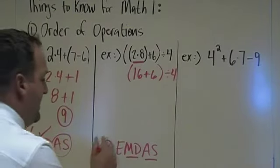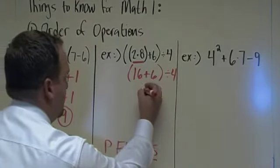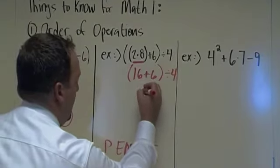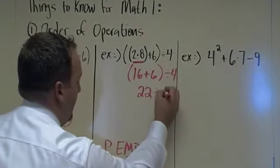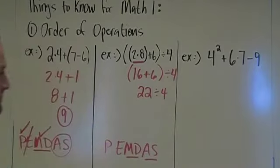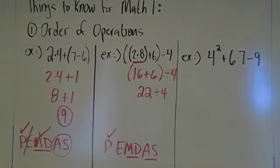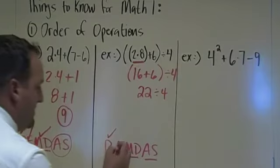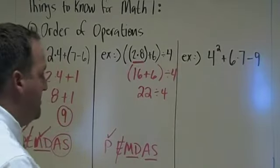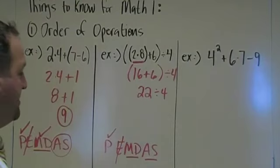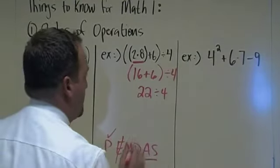We still have parentheses to take care of, so 16 plus 6 is going to give me 22 divided by 4. So all of our parentheses are taken care of now. No exponents to deal with in this problem. Now it's a multiplication and division problem. There's division left. So we're going to divide. 22 divided by 4.